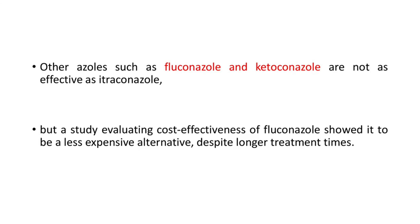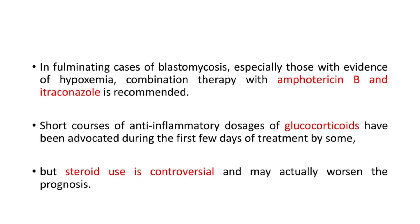Itraconazole is the drug of choice but requires a minimum of two months of treatment. In fulminating cases of blastomycosis, especially those with evidence of hypoxemia, combination therapy with amphotericin B and itraconazole is recommended. Short courses of anti-inflammatory dosages of glucocorticoids have been advocated during the first few days of treatment by some, but steroid use is controversial and may actually worsen the prognosis.